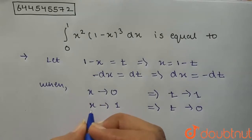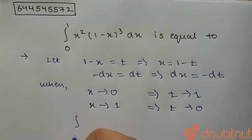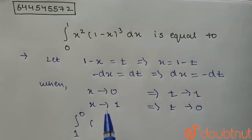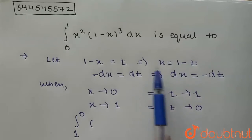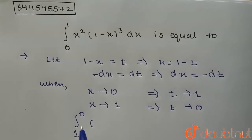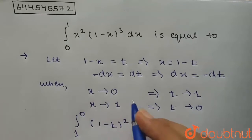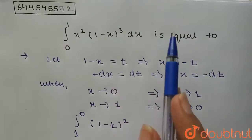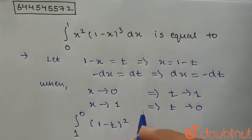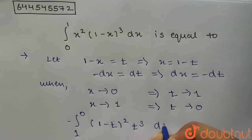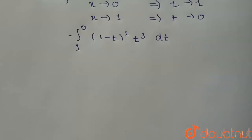So the integral becomes from 1 to 0. Now substituting, x² becomes (1-t)², and (1-x)³ becomes t³, so we have integral from 1 to 0 of (1-t)² times t³ times minus dt.